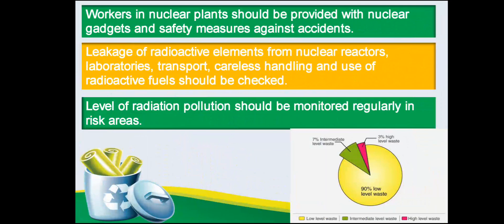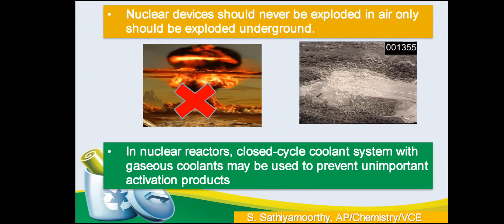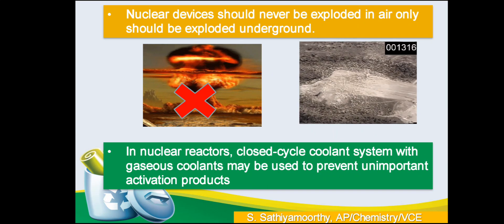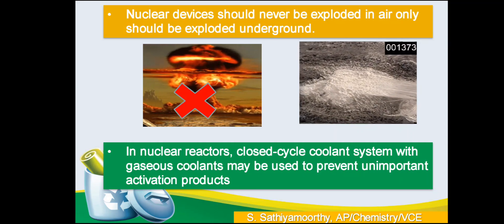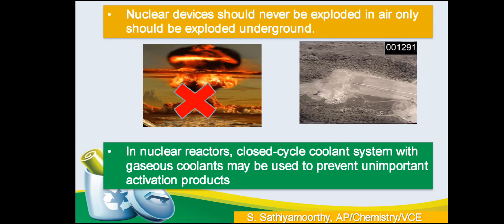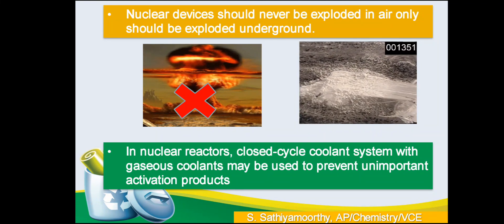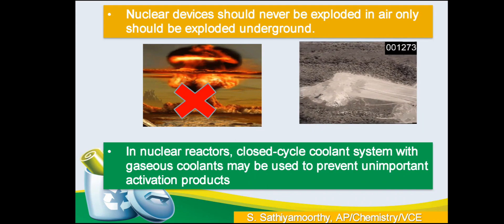The leakage of radioactive nuclides from power plants or laboratories should be checked regularly. Radiation pollution monitors should be installed and the level of radiation emitted should be monitored thoroughly. The explosion of nuclear devices should never be done in the air or on the earth's surface — it should be done only underground. In the nuclear reactors, the coolant should be designed in such a way that it is closed with the nuclear core, so that the radioactive nuclides cannot escape from the nuclear core.